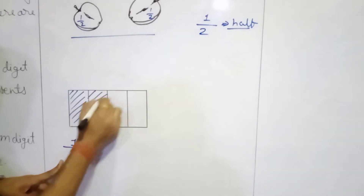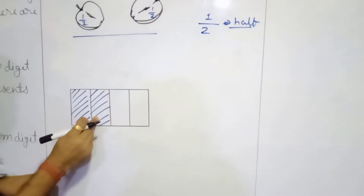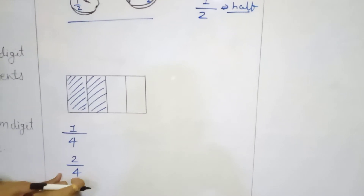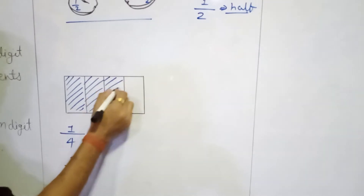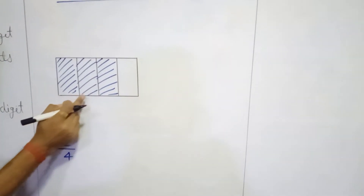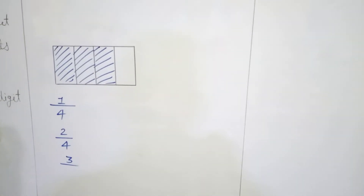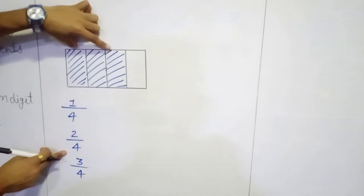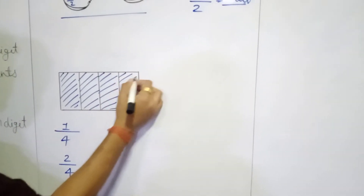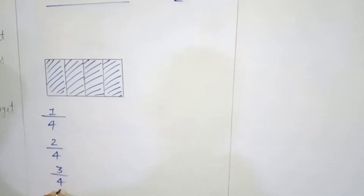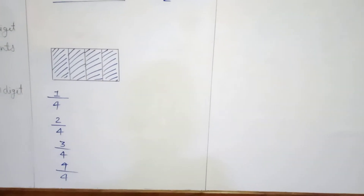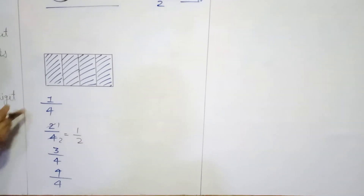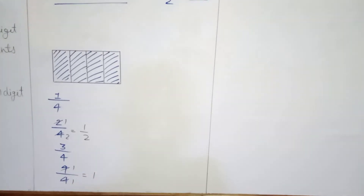If we consider 2 shaded parts, we are talking about 2 parts out of 4, that will become 2 upon 4. If we consider 1 more, it will become 3 out of a total of 4, so 3 upon 4. If we have all 4 shaded parts, that is 4 upon 4. We can simplify: 4 upon 4 - 4 ones are 4, so it becomes 1. And 2 upon 4 - 2 ones are 2, 2 twos are 4, it will become 1 upon 2.